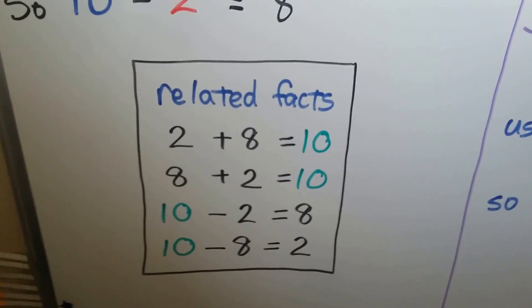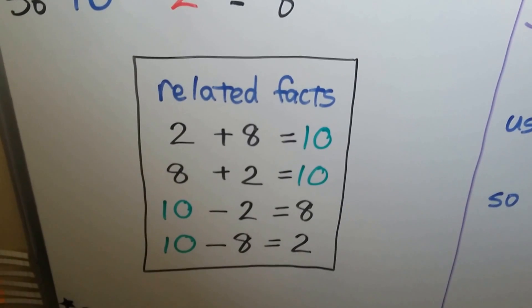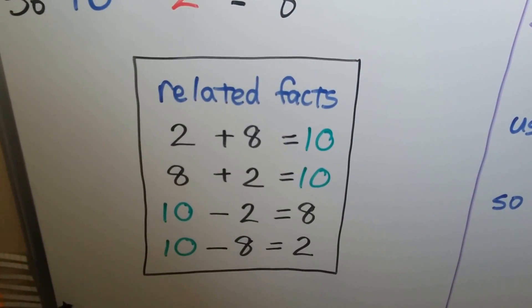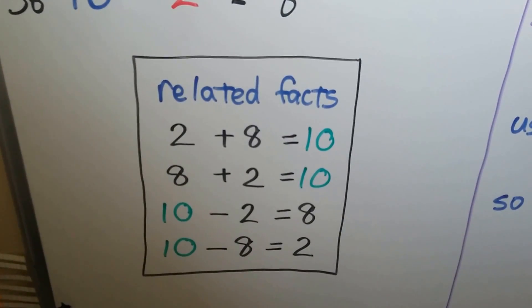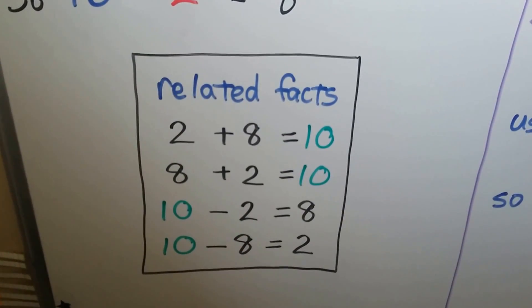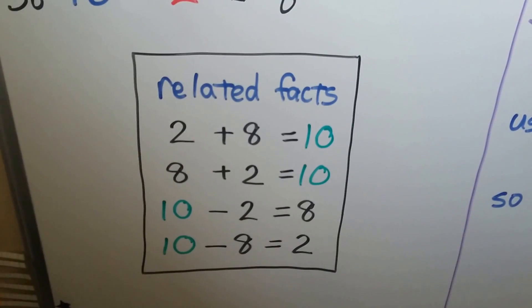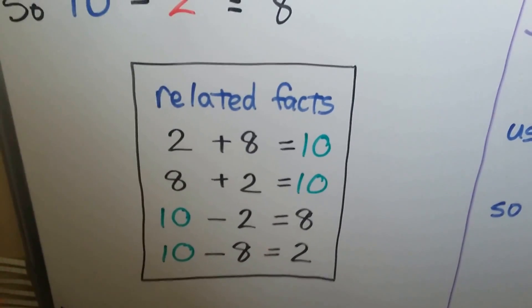The related facts are: 2 plus 8 is equal to 10; 8 plus 2 is equal to 10; 10 minus 2 is equal to 8; and 10 minus 8 is equal to 2.